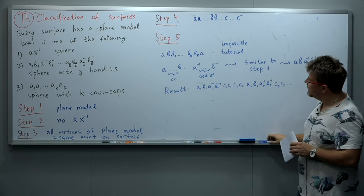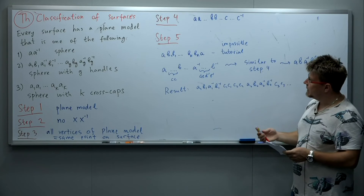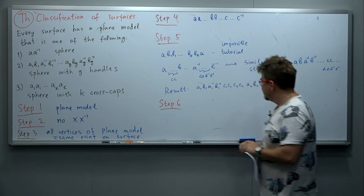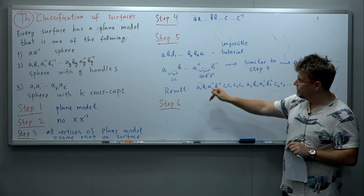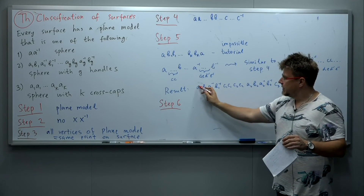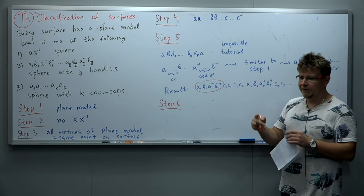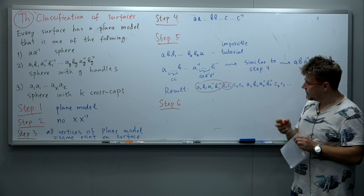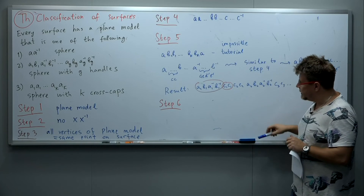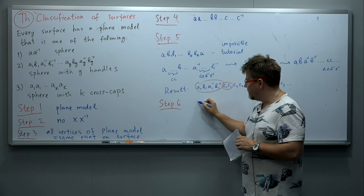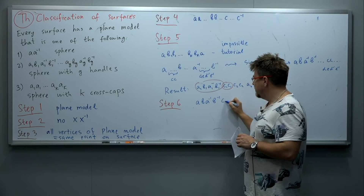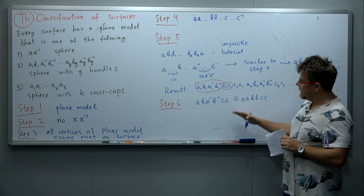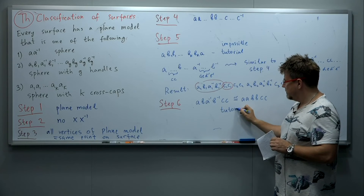That is the end result of step five. Step six: notice that after step five we may have a mixture of blocks like A, B, A⁻¹, B⁻¹ where two letters alternate with their inverses, and blocks like C, C where it is just two repeated letters. In step six we show that the surface given by A, B, A⁻¹, B⁻¹, C, C is homeomorphic to A, A, B, B, C, C. This step is again a tutorial exercise.